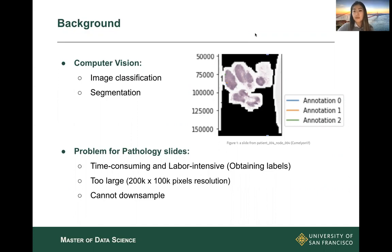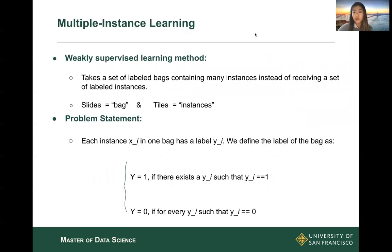Obtaining labels is time-consuming and labor-intensive. Furthermore, a pathology slide can be up to 200K by 100K pixels resolution and will not fit in memory for classification. Downsampling is normally not an option because we are trying to detect a tiny area, such as a few dots in the top right image. In this case, we can use multiple instance learning, a weakly supervised learning method that takes a set of labeled bags containing many instances instead of receiving a set of labeled instances.